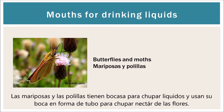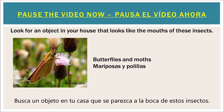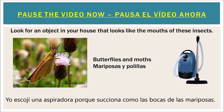Butterflies and moths have mouths for sucking liquids. They eat nectar from plants using their tubular mouth parts. Pause the video now and look for an object in your house that reminds you of this insect's mouth. I chose a vacuum because it sucks things up, just like the butterfly's mouth.